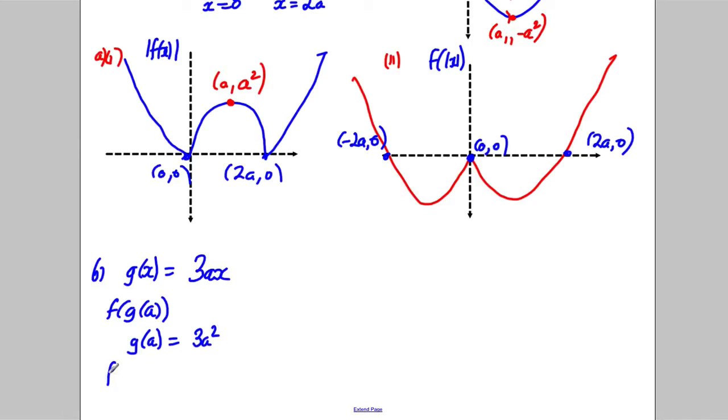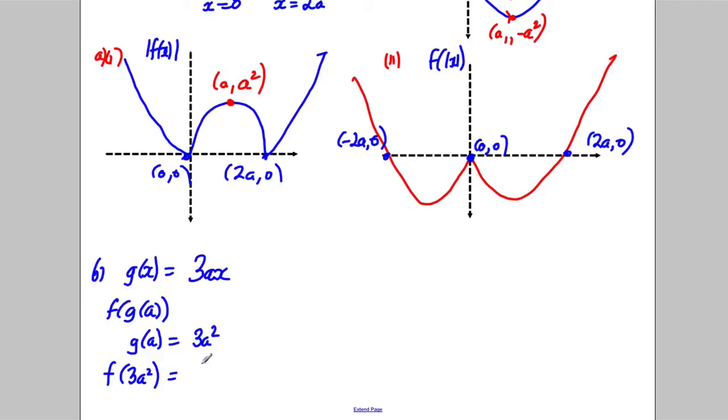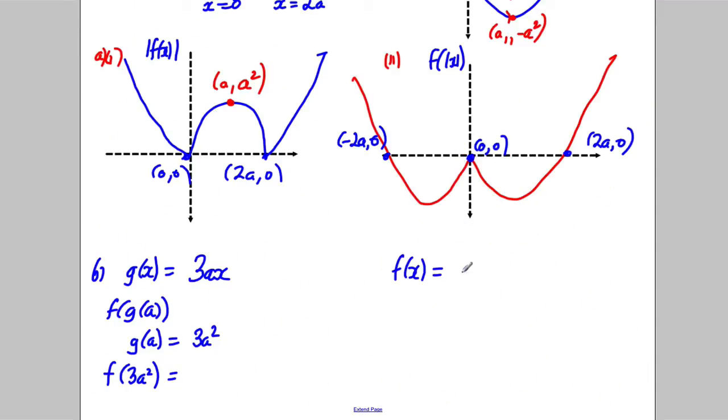So f(g(a)) is f(3a²). So we want to put 3a² into our original function up here. So our original function f(x), what was that? It was x² - 2ax.